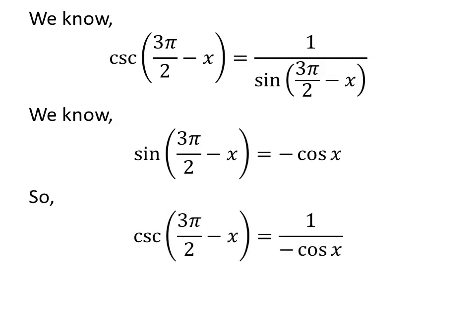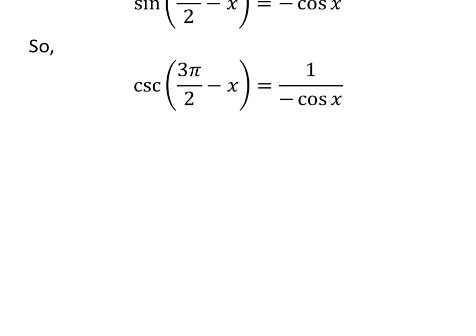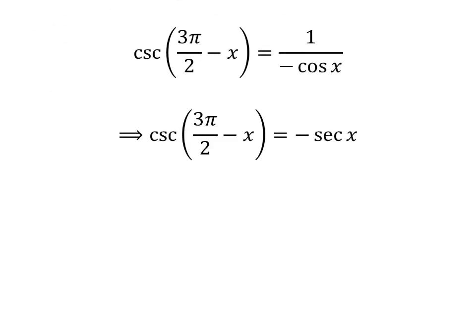Let us apply the above identities in the expression of cosecant of 3 times pi upon 2 minus x. So, cosecant of 3 times pi upon 2 minus x is equal to 1 upon minus cosine of x. As 1 upon minus cosine of x is equal to minus secant of x, cosecant of 3 times pi upon 2 minus x is equal to minus secant of x.